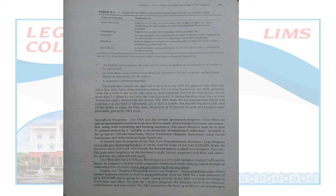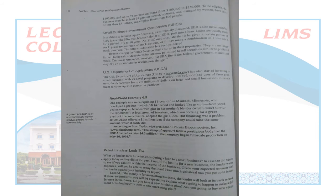The SBA also has several specialized programs. First, there are specialized government contracts to be awarded to small disadvantaged business subcontractors along with counseling and bonding assistance. In addition to indirect equity financing, SBICs also make qualified SBA loans. The SBA matches each dollar that an SBIC puts into a loan. Loans are usually made for a period of 5 to 10 years. The SBA may stipulate that it will be given a certain portion of stock purchase warrants, or it may make a combination of loan and stock purchase.